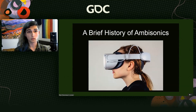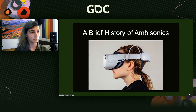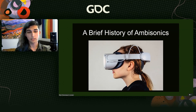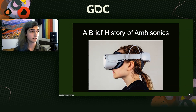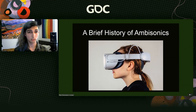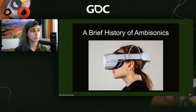Ambisonics came about around the 1970s, but it wasn't really widely used until virtual reality and digital signal processing emerged. Digital signal processing allowed for widespread use of ambisonics, and virtual reality allowed consumers to use ambisonics in their gameplay experiences.